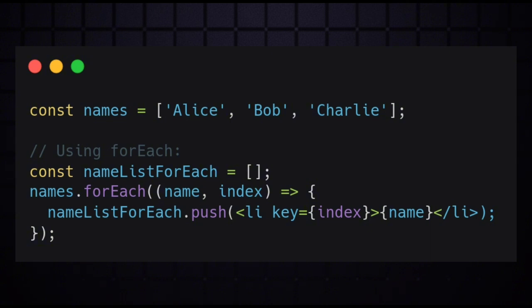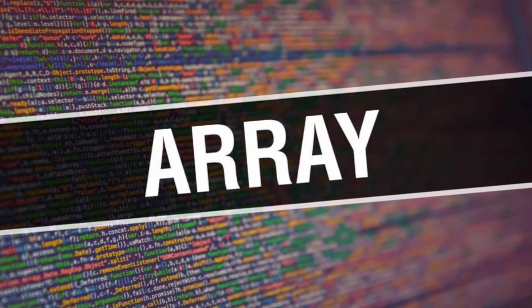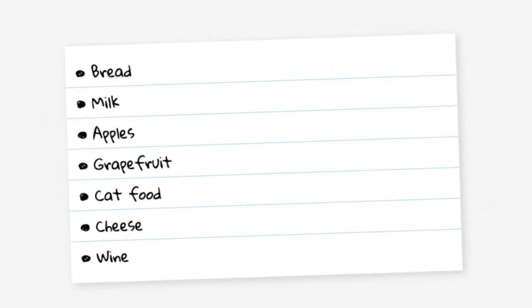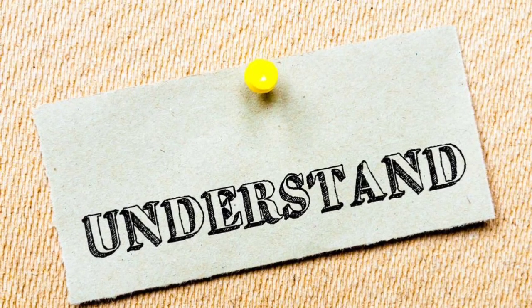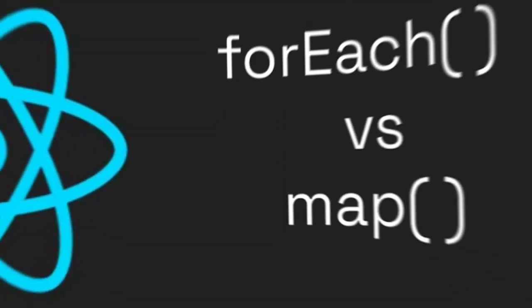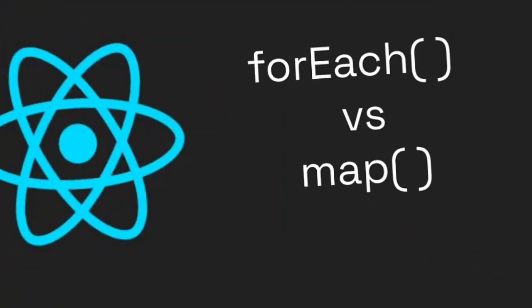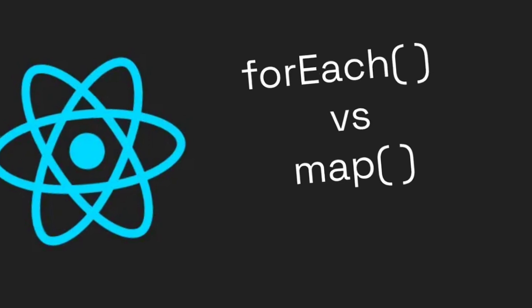Since map returns a new array, it's more concise and idiomatic for rendering a list in a React component. I hope you understand why we use map instead of forEach in React.